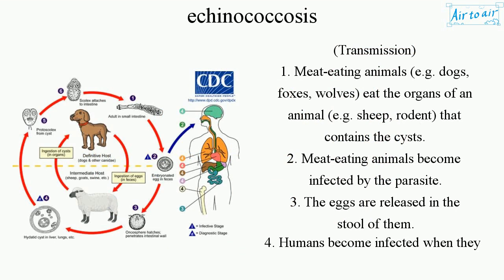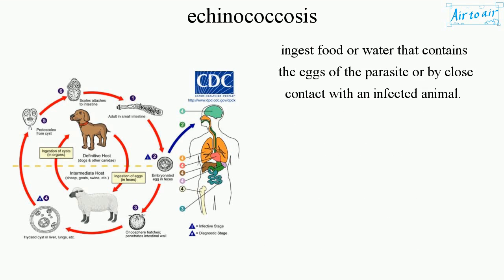Transmission. 1. Meat-eating animals, e.g. dogs, foxes, wolves, eat the organs of an animal, e.g. sheep or rodents, that contain the cysts. 2. Meat-eating animals become infected by the parasite. 3. The eggs are released in their stool. 4. Humans become infected when they ingest food or water containing the eggs of the parasite, or by close contact with an infected animal.